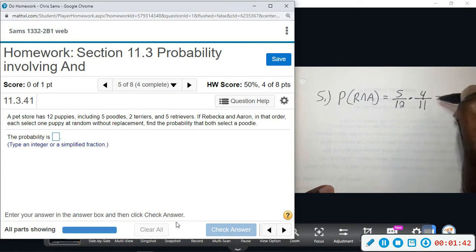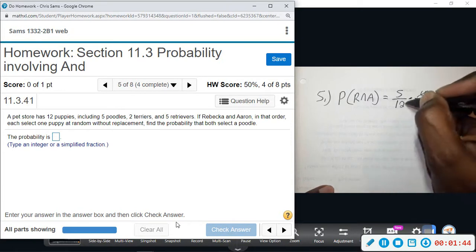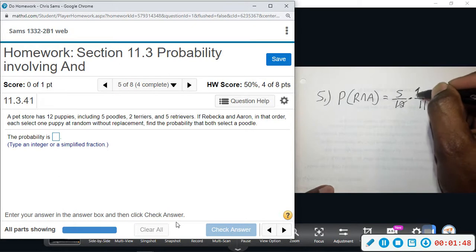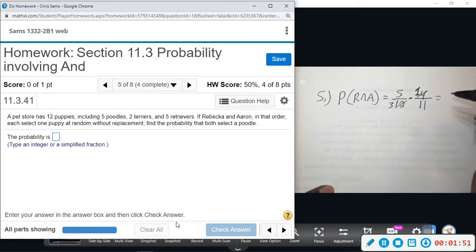And we can reduce before we multiply, so we can divide both of these numbers by four. So divide by four, that leaves us with one. Divide by four, that leaves us with three. And then five times one is five, and three times eleven is thirty-three.